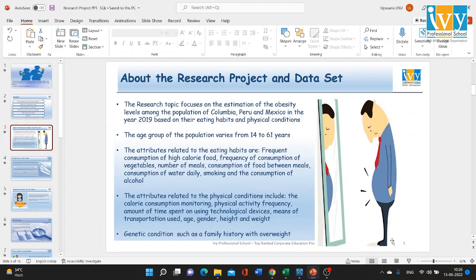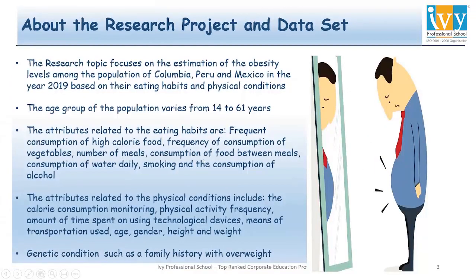The attributes relating to eating habits are frequent consumption of high calorie food, frequency of consumption of vegetables, number of meals taken in a day, consumption of food between meals, consumption of water daily, smoking, and consumption of alcohol. The attributes relating to physical conditions include calorie consumption monitoring, physical activity frequency, amount of time spent on technological devices, means of transportation, age, gender, height, and weight. There is only one attribute relating to genetic condition: family history with overweight.